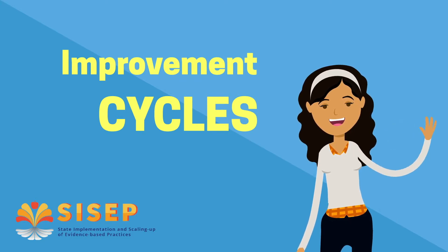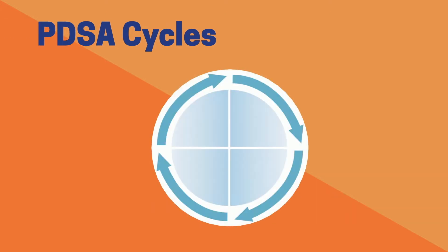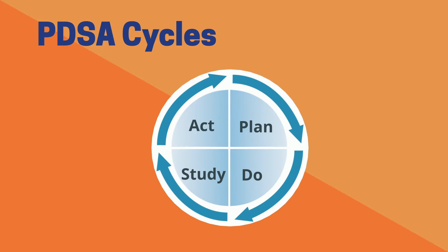Welcome to the CISEP video on improvement cycles. This video will navigate the Plan-Do-Study-Act cycle, also known as a PDSA cycle. While many other models for continuous improvement exist, the PDSA cycle uses a framework to identify changes that are needed in implementation efforts. PDSA cycles include four steps.